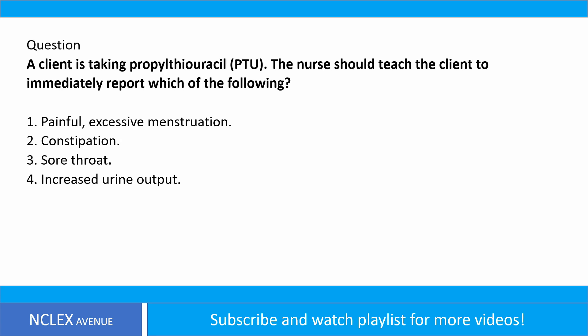Question. A client is taking propylthiouracil, PTU. The nurse should teach the client to immediately report which of the following? 1. Painful, excessive menstruation. 2. Constipation. 3. Sore throat. 4. Increased urine output.